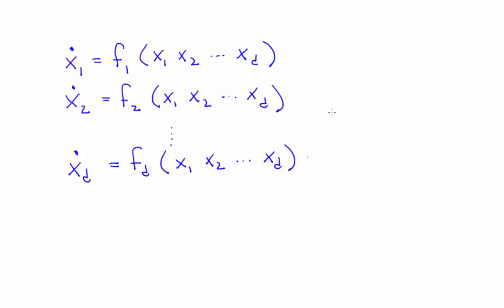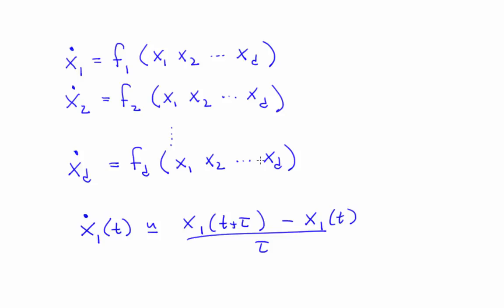You can think of delay coordinates as an approximation to x1-dot. Indeed, if you have x1 of t and x1 of t plus tau, you can compute an approximation to x1-dot using first-order forward differences like this. That is not a formal sketch of the proof of the theorems, but it's a taste of the idea that makes them work. I'll give you pointers to all of the papers at the end of this segment.